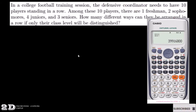For a clear understanding, here is an example: In a college football training session, the defensive coordinator needs to have 10 players standing in a row. Among these 10 players there are one freshman, two sophomores, four juniors, and three seniors. How many different ways can they be arranged in a row if only their class level will be distinguished? We have 10 players, so n = 10.